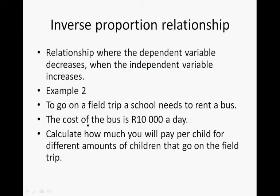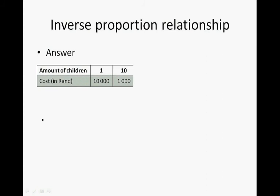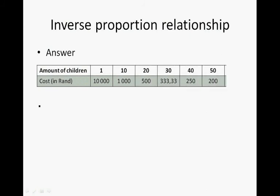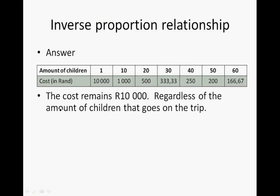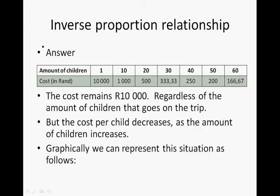This example differs from example 1. In example 1 we had to calculate the total cost, but now in example 3 we have to calculate the cost per child. The cost remains R10,000 regardless of the amount of children that goes on the trip, but the cost per child decreases as the amount of children increases. So how do we calculate these amounts?